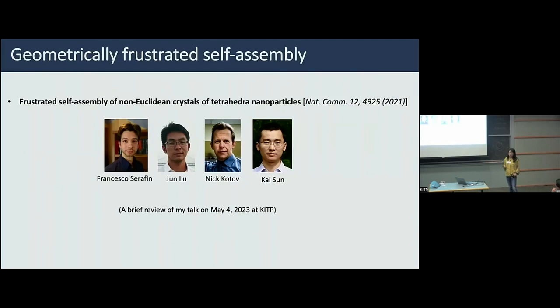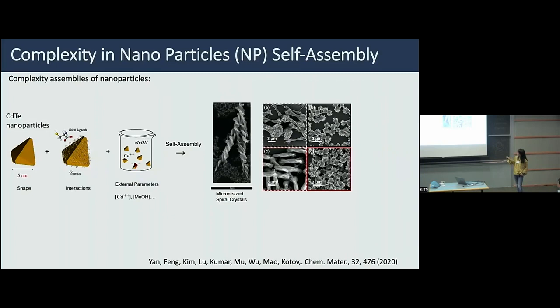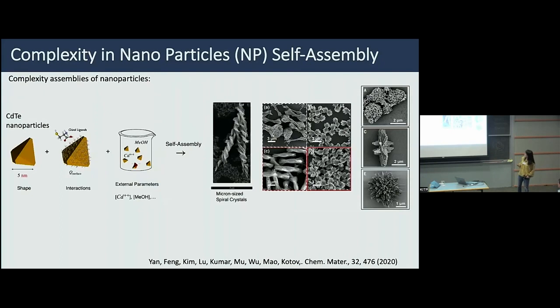I'll give a brief overview of recent work on frustrated self-assembly of non-Euclidean crystals of tetrahedron nanoparticles, done in collaboration with my former postdoc Francesco, my colleague Nick Kotov, his postdoc Jun, and my colleague Kai. In this experiment from Nick Kotov's group, tetrahedron nanoparticles coated with chiral ligands assemble into very interesting chiral structures at the micron scale. Under different conditions they also obtain other complicated structures like bowtie-like structures, bundles, hedgehogs, and other intricate curved shapes.